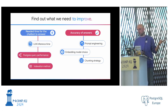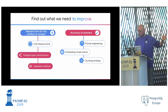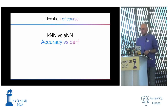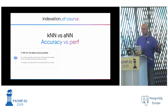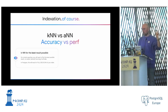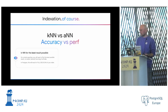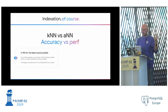Today we'll focus on indexing. So far we've been doing KNN — K-Nearest Neighbor. What Postgres does is a full sequential scan of the table, comparing the embedding against every single row. This works fine with small data sets, but with large data sets it becomes a problem. The good news is that since we compare with every single rule, we always get the best answer.